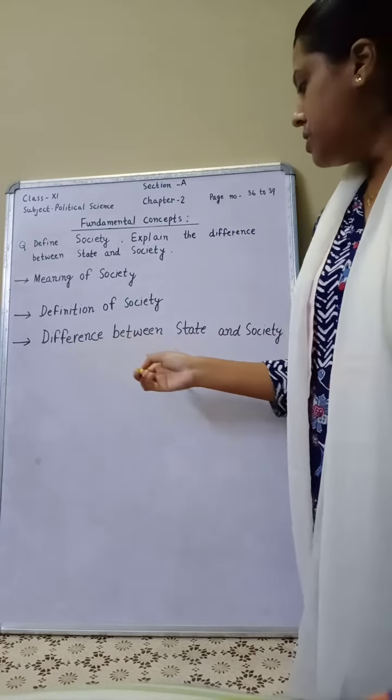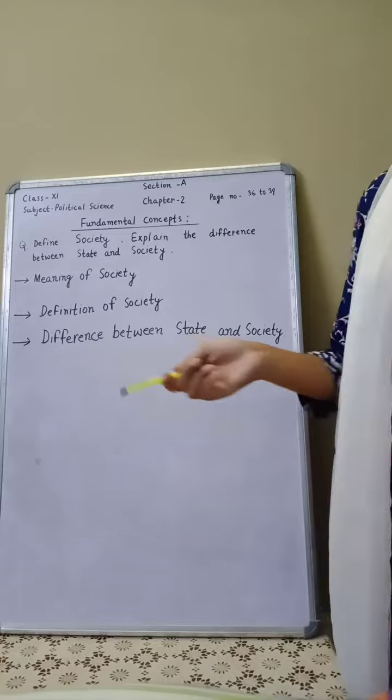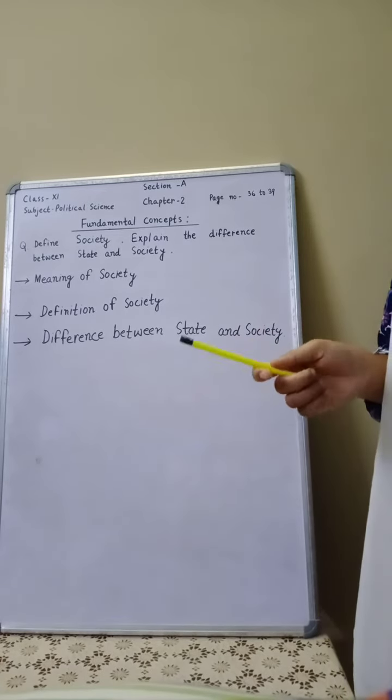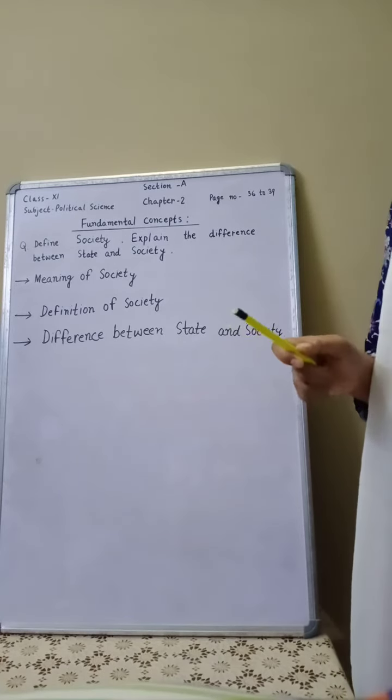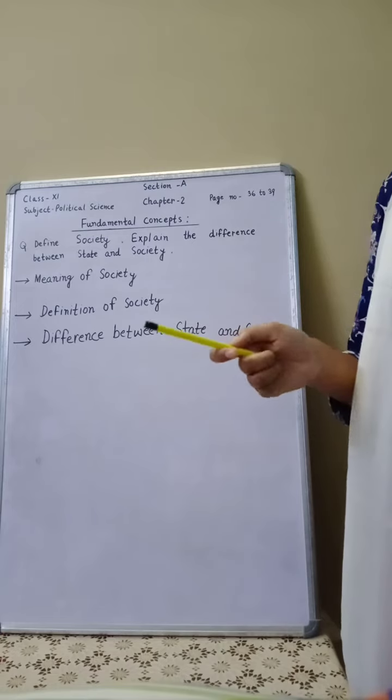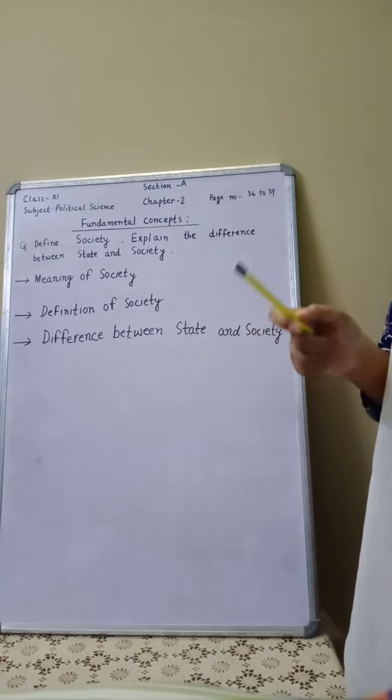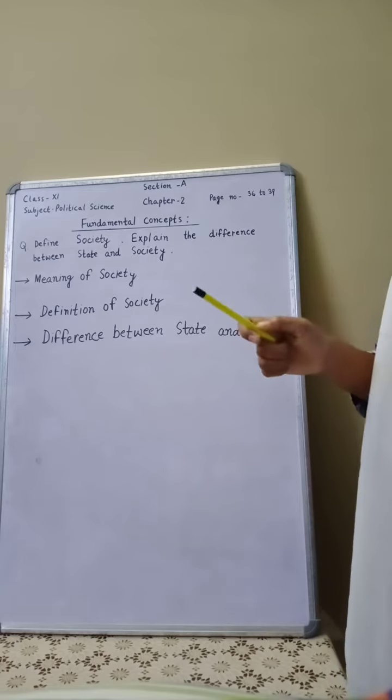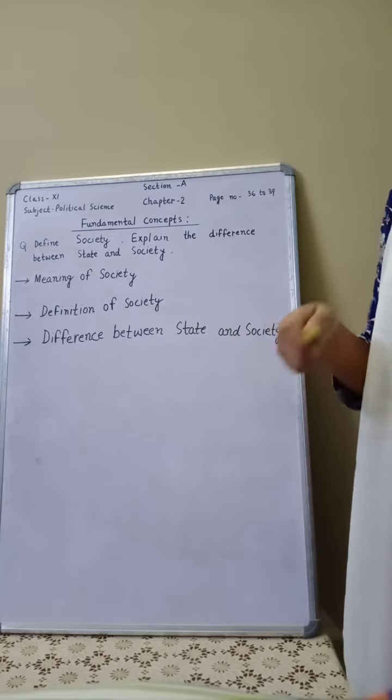And here, difference between state and society. The first is, state represents unorganized unity of human beings. On the other hand, society reflects the natural unity of human beings into social relationships.